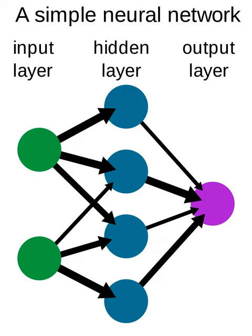The term neural network was traditionally used to refer to a network or circuit of biological neurons. The modern usage of the term often refers to artificial neural networks, which are composed of artificial neurons or nodes. Thus, the term has two distinct usages.